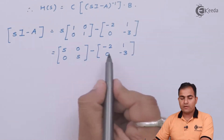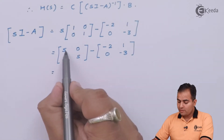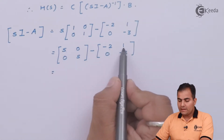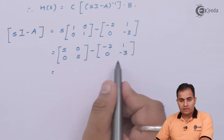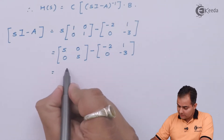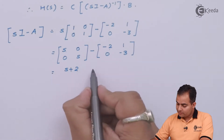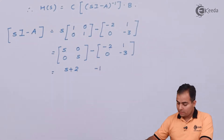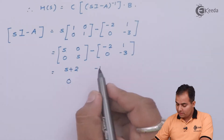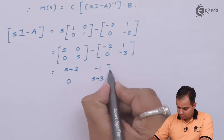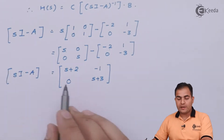The next step is to perform the subtraction sI minus A. The first element is subtracted from the first, the second from the second, and so on. So S minus (−2) is S+2; 0 minus 1 is −1; 0 minus 0 is 0; and S minus (−3) is S+3. This is the equation of sI minus A.